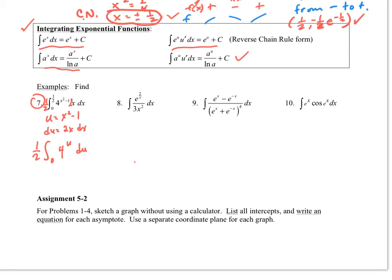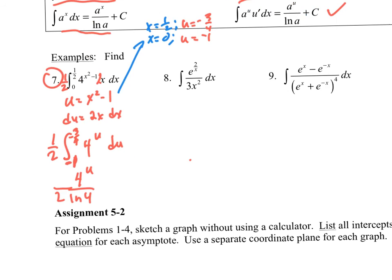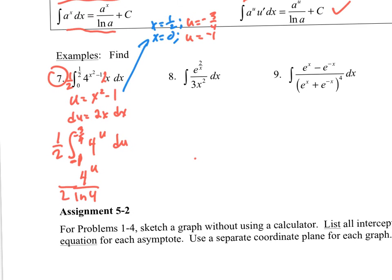We know that that would be 4^u / ln 4. And I do have the 1/2 out in front. Now I showed how to change the values of my limits of integration for u. This is -1 and this is -3/4. So I'm going to leave it in u and go from -1 to -3/4. If I plug those in, I'm going to just get 4^(-3/4) / (2 ln 4) minus 4^(-1) / (2 ln 4). I'm not going to simplify that for you right now, but you can simplify that and see where that takes you.